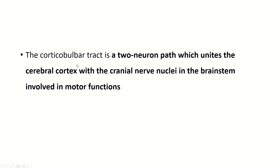It is a descending tract or motor tract, and there are two neurons present in this pathway: the upper motor neuron and the lower motor neuron. The upper motor neuron is located in the motor cortex of the cerebrum, and the lower motor neuron is located at the brainstem nuclei.